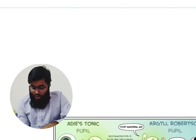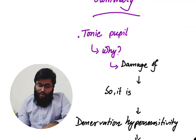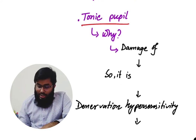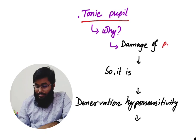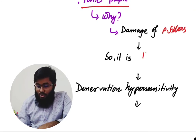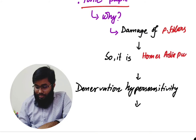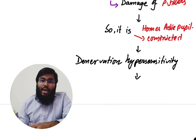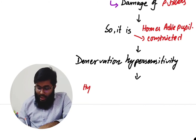To summarize: this is a case of tonic pupil. The pupil is tonic because there is damage to the parasympathetic fibers — this condition is known as Holmes-Adie pupil. The pupil is constricted after the accommodation reflex, and denervation hypersensitivity causes hyper-response to pilocarpine.